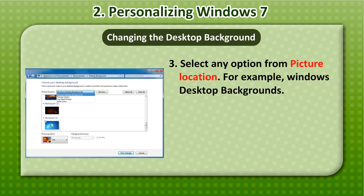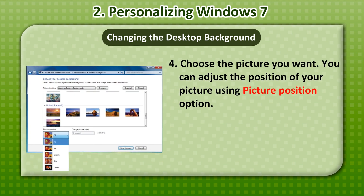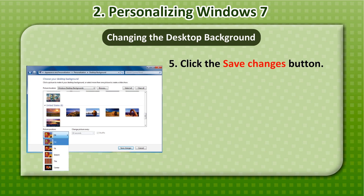3. Select any option from picture location, for example Windows Desktop Backgrounds. 4. Choose the picture you want. You can adjust the position of your picture using the Picture Position option. 5. Click the Save Changes button.